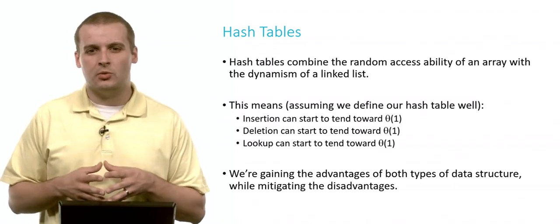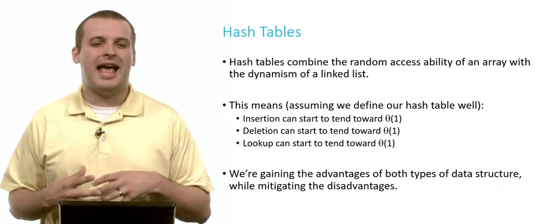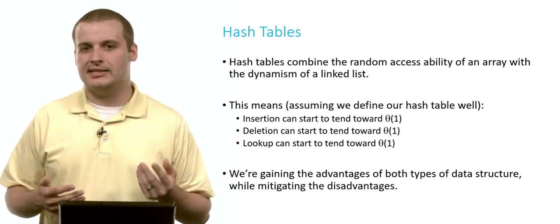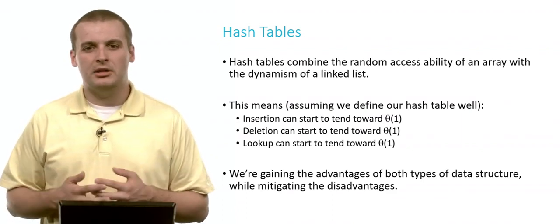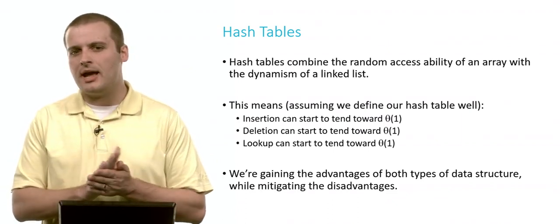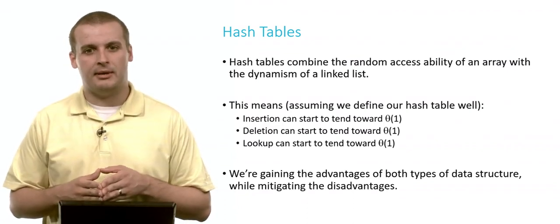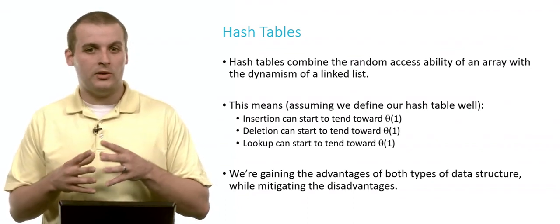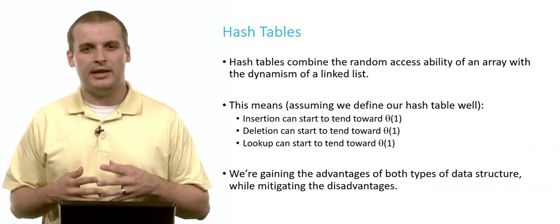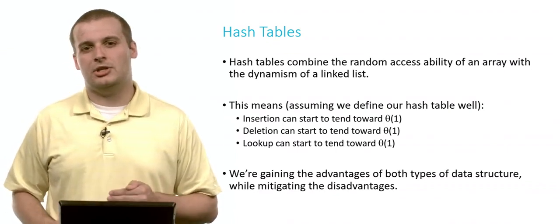If implemented correctly, we're taking the advantages of both data structures you've already seen, arrays and linked lists. Insertion can start to tend toward theta of 1. Theta is just the average case. What's actually going to happen? On average, insertion into a hash table can start to get close to constant time. And deletion can get close to constant time. And lookup can get close to constant time. We don't have a data structure yet that can do that. And so this already sounds like a pretty great thing. We've really mitigated the disadvantages of each on its own.